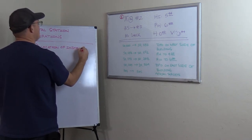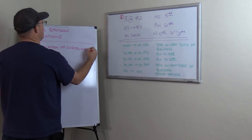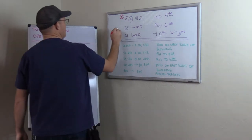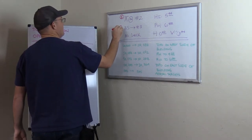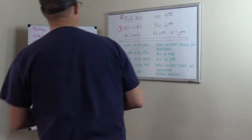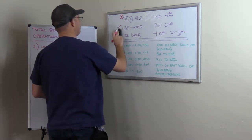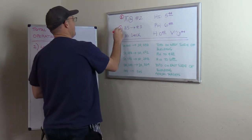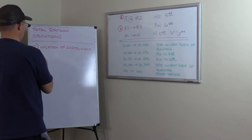The second thing we're told is the location of the back site. So for this station setup, I'm back siding point number three. So location of the back site.